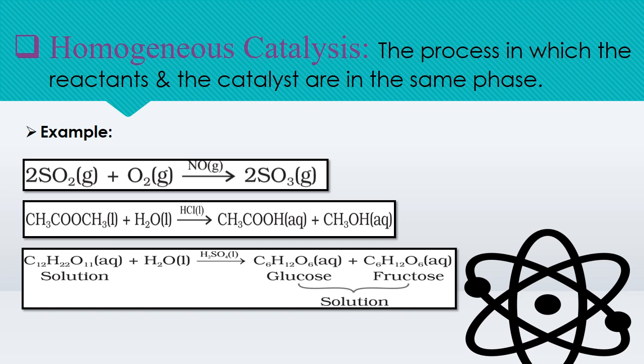Examples of homogeneous catalysis include: oxidation of sulfur dioxide to sulfur trioxide in the presence of nitrogen oxide as a catalyst; hydrolysis of methyl acetate catalyzed by H⁺ ions furnished by hydrochloric acid to obtain acetic acid and alcohol; and hydrolysis of sugar catalyzed by H⁺ ions furnished by sulfuric acid.